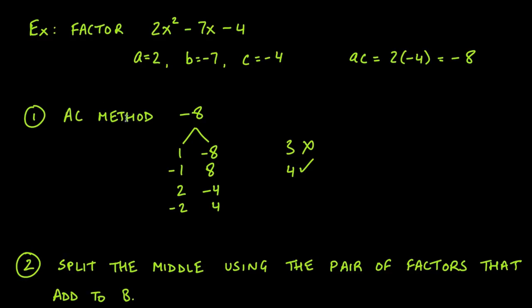We start by using the AC method — we multiply a and c. Here a is 2 and c is negative 4, so we get negative 8. We find factors of negative 8 that add up to b: 1 × (-8), (-1) × 8, then 2 × (-4), (-2) × 4. Three does not work, and 4 is already on the list, so we're done.